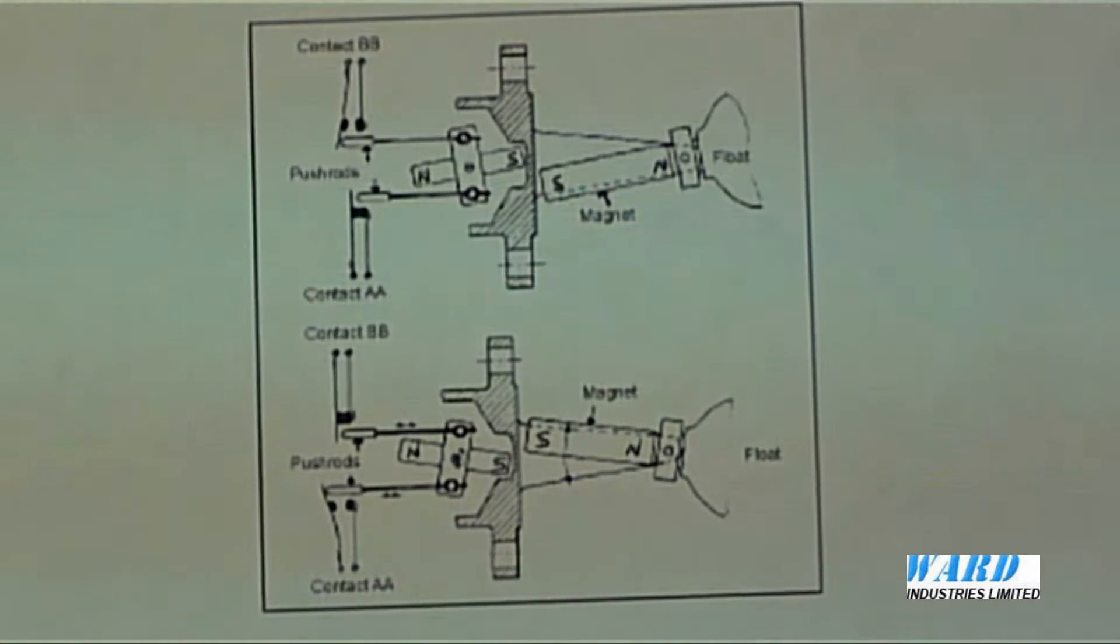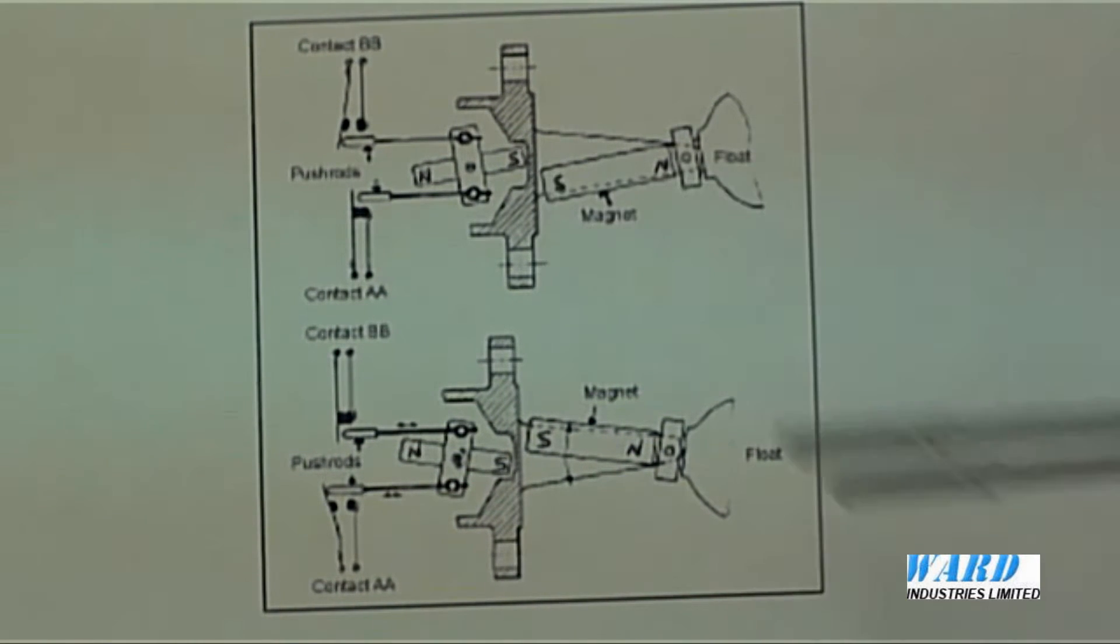The principle of operation is magnetic repulsion. One permanent magnet forms part of the float assembly. Here's the float. Here's the permanent magnet. In this case, south pole, north pole.